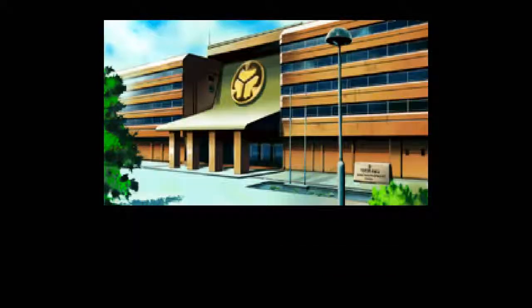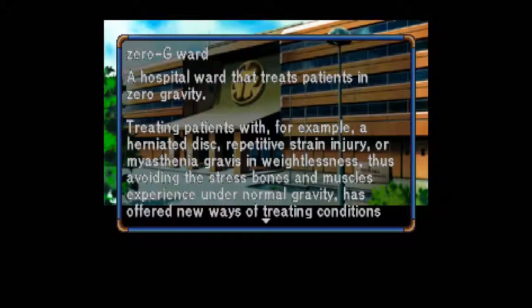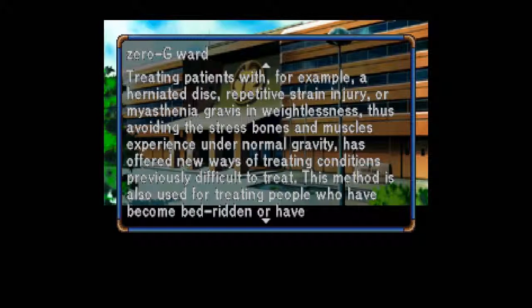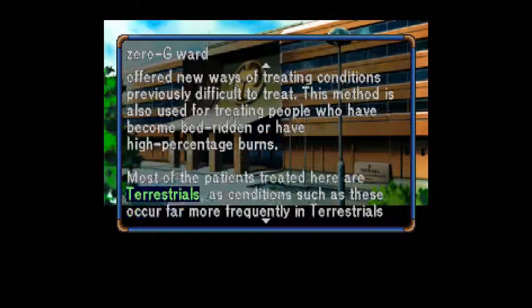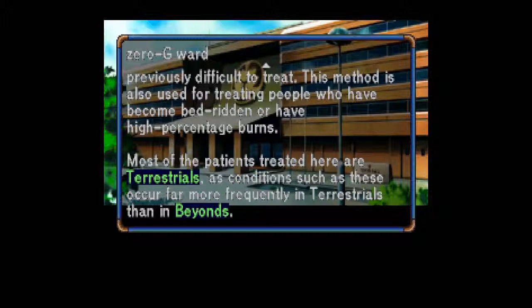And finally, Zero-G Ward: A hospital ward that treats patients in zero gravity. Treating patients with, for example, a herniated disc, repetitive strain injury, or myasthenia gravis in weightlessness — I actually know what that is — thus avoiding the stress bones and muscles experience under normal gravity, has offered new ways of treating conditions previously difficult to treat. This method is also used for treating people who have become bedridden or have high percentage burns. Most of the patients treated here are terrestrials, as conditions such as these occur far more frequently in terrestrials than in Beyonds.